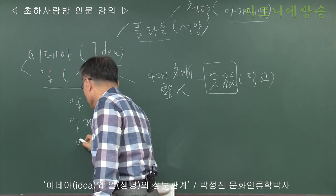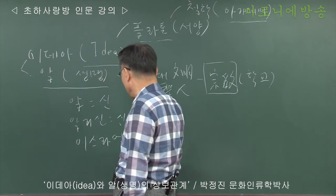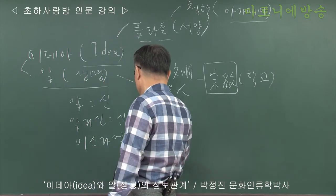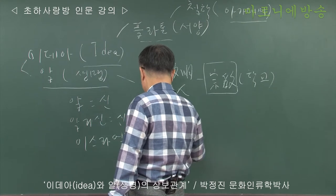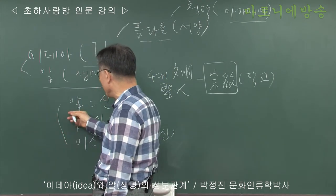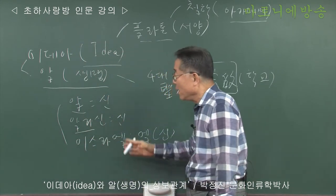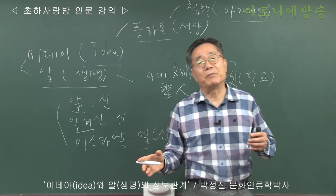이스라엘 할 때 이스라엘이란 게 여기 엘이 신이죠. 엘이 신을 나타납니다. 이게 전부 이제 알의 변형입니다. 알, 알라, 엘. 이게 전부 다 생명과 관련이 있어요.